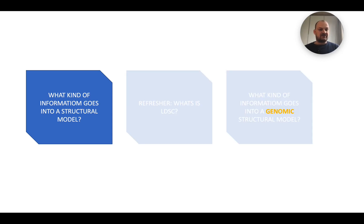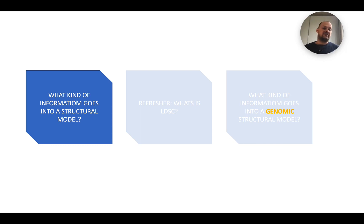We'll cover that you can fit a structural equation model based on raw data or the covariance matrix of that raw data. That's an important conceptual step, because if you understand that, you can later understand why we can fit structural equation models when we don't observe any raw data in Genomic SEM. With raw data, I mean phenotypic observations — we don't observe those at all in Genomic SEM. The only thing that goes in is the GWAS summary data.